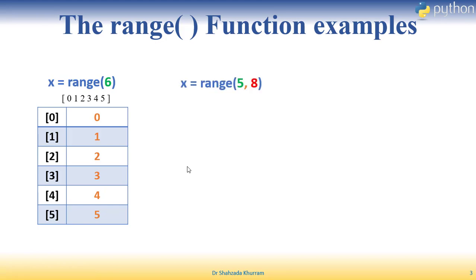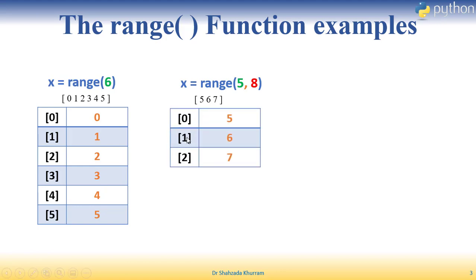Next example: I will start with 5 and stop at 8. So range(5, 8) will store 5, 6, 7 — these three values. The index table starts at zero, one, two, mapping to values 5, 6, 7 respectively.